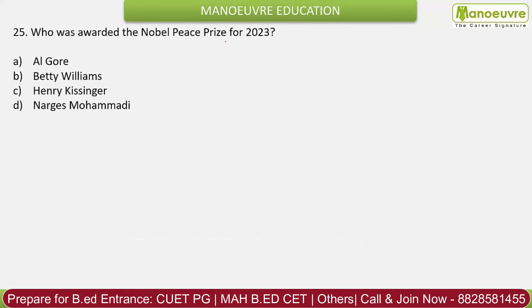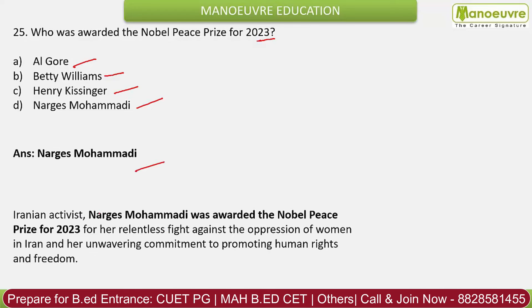Question 25: Who was awarded the Nobel Peace Prize for 2023? This is a current affairs question. Options: AI Gore, Betty Williams, Henry Kissinger, Narges Mohammadi. The correct answer is Narges Mohammadi. Iranian activist Narges Mohammadi was awarded the Nobel Peace Prize for 2023 for her relentless fight against the oppression of women in Iran.